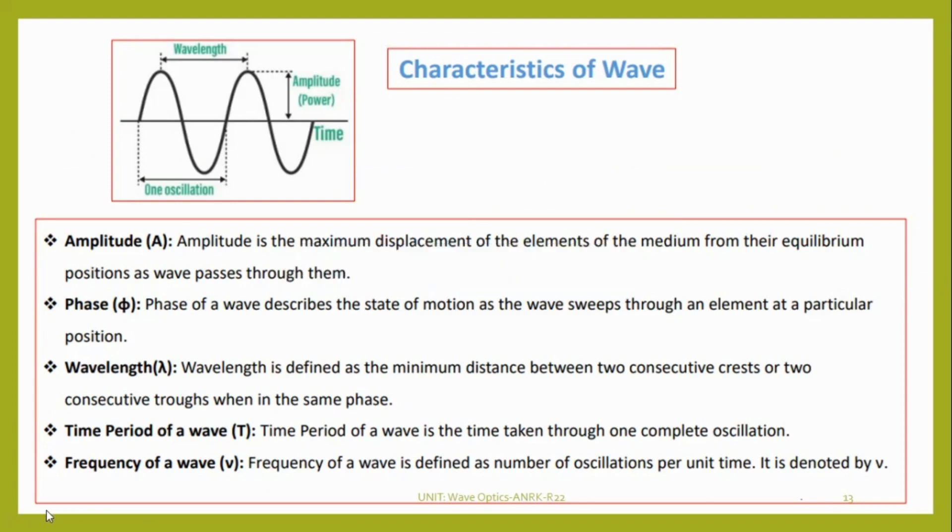Now we will see the different characteristics of waves. When we come to waves, we have amplitude. If we take this transverse wave, amplitude is nothing but from mean position to the maximum distance one side it can move. That is what we call amplitude.